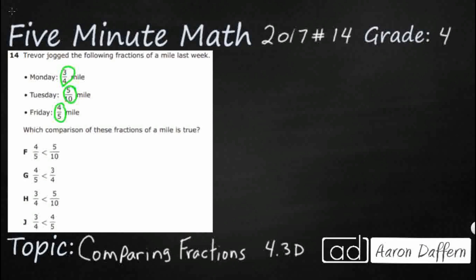We can't do any comparisons because they all have different denominators and different numerators, which means we need to find the least common denominator. We need to list out the multiples of our denominators. If we can find the first number that shows up on each of these lists, we can change all these fractions into equivalent fractions.